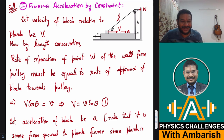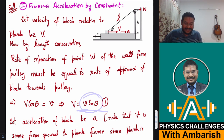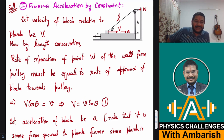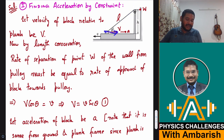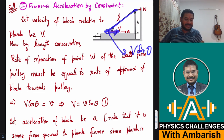Now to find the acceleration, we differentiate. Differentiating V = v·sec(theta) with respect to time gives a term involving d(theta)/dt. Since theta is the angle the cord makes, d(theta)/dt is the angular velocity of the block about the pulley. The component of the block's velocity perpendicular to the cord is V·sin(theta), so d(theta)/dt = V·sin(theta) / L, where L is the length of cord between the block and pulley.